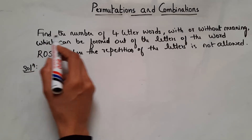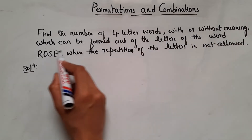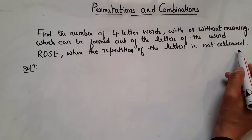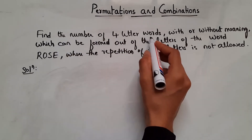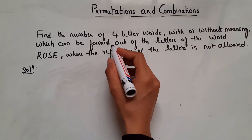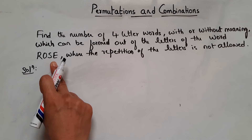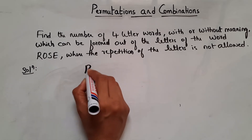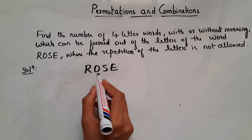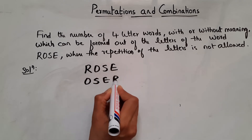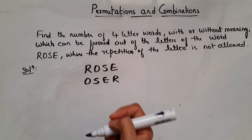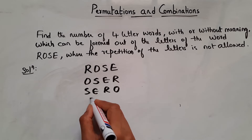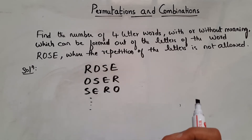So now let us see this problem. Find the number of 4-letter words, with or without meaning, which can be formed out of the letters of the word ROSE, where the repetition of letters is not allowed. So we have to find how many 4-letter words can be formed out of ROSE without repeating the letters. ROSE can be written as O, S, E, R — that is one way — or S, E, R, O — that is one more way. Like this, how many ways can you write ROSE without repeating the letters? That is what they are asking.